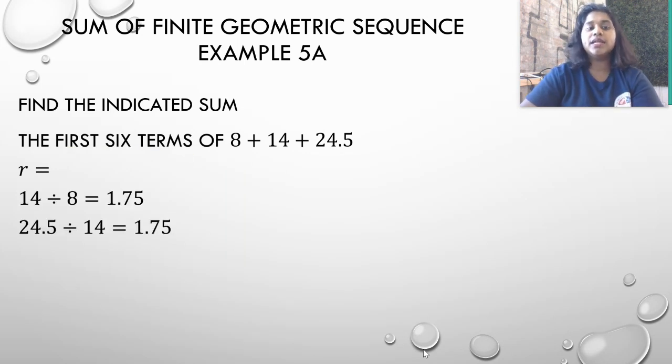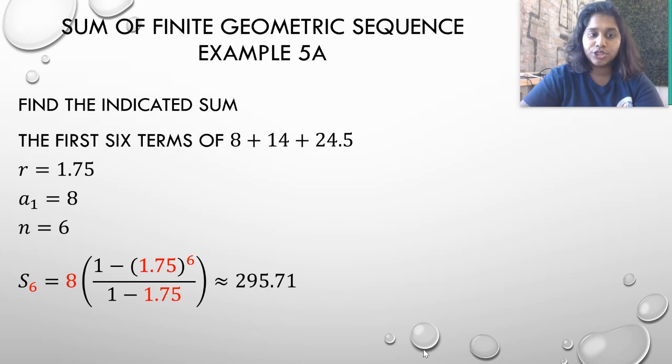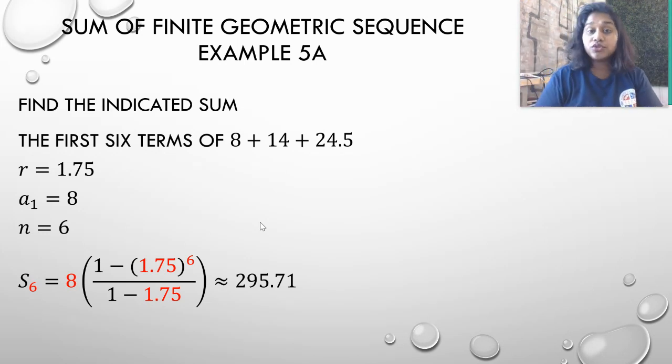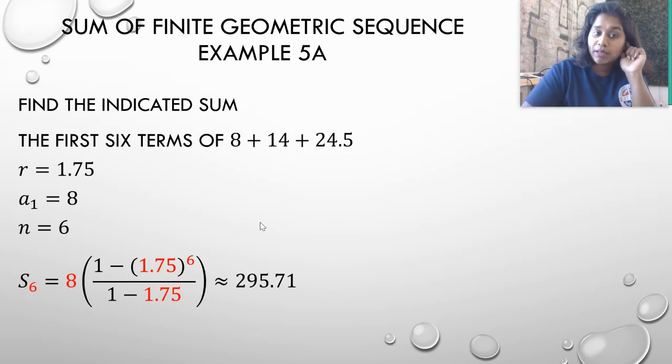And we're going to do 14 divided by 8 and 24.5 divided by 14. And we ended up with 1.75 each time. So there's our common ratio. Now we're ready to submit this into our sum formula. So S sub n is equal to a sub 1 times 1 minus r to the n and blah blah blah. So I went ahead and plugged it in. S sub n is now S sub 6 because those are my first six terms. My a sub 1 is 8. My r value is 1.75 and my n value is 6 again. So I plug it all into a calculator and I ended up with 295.71. Make sure your PEMDAS is in the right order. If you're using a calculator, make sure your parentheses are all in the right spot in order to enforce an order of operation or you yourself have to begin inside working out.